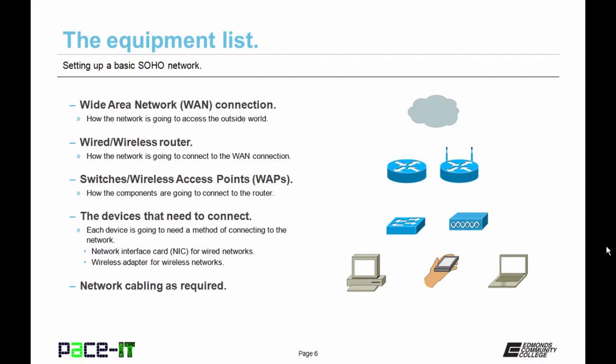You also need to consider switches and/or wireless access points. So you have your WAN connection, you have your wired or wireless router going to the WAN — how are your devices going to connect to that router? That's where the switches and wireless access points come in. And then, what type of devices need to connect to the network? Each device is going to need a method of connecting.